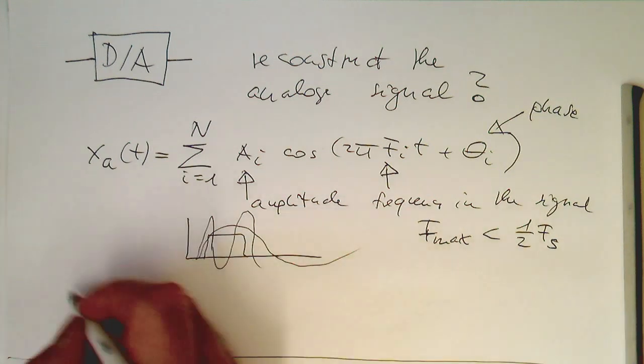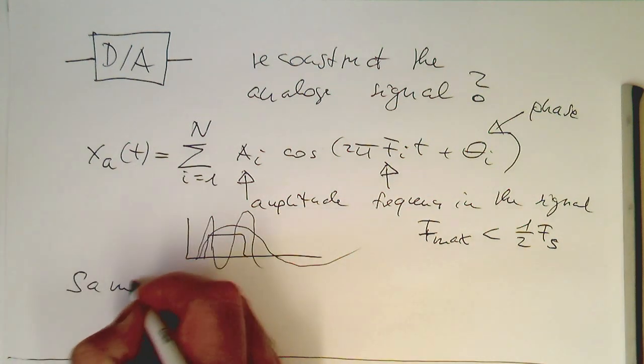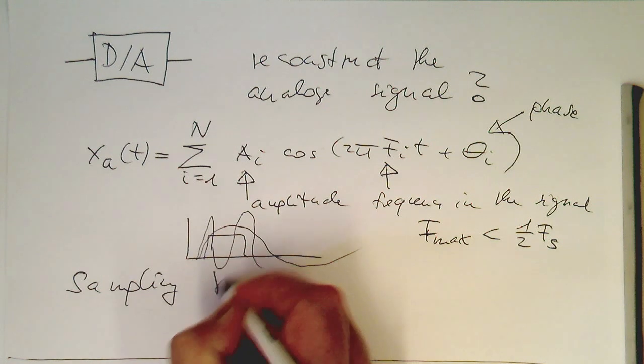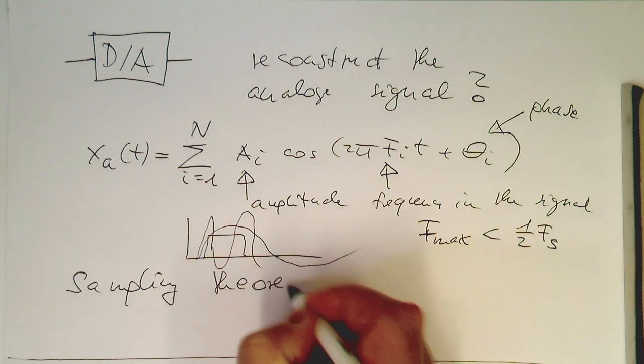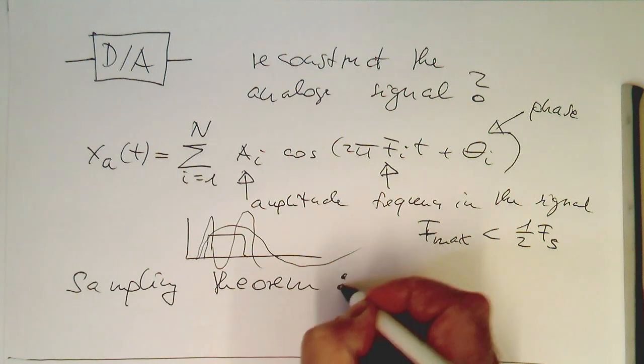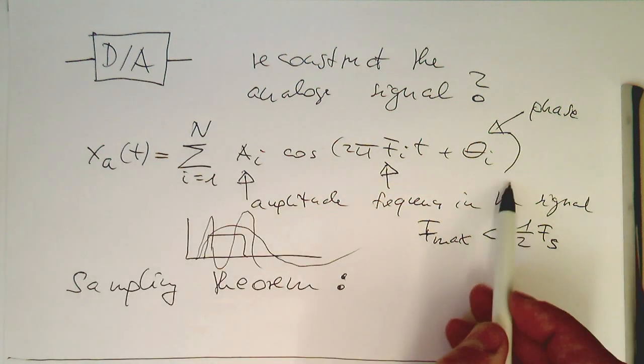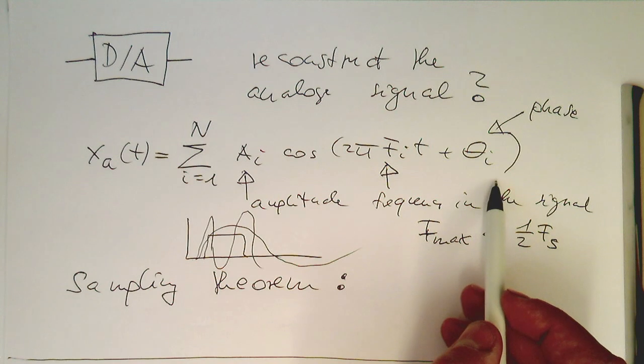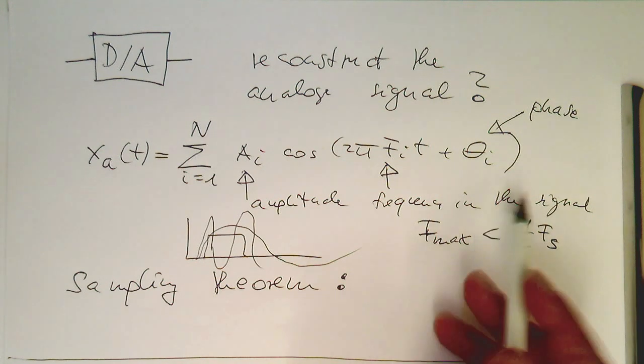So the so-called sampling theorem states that if a signal is constructed this way, it is possible to completely reconstruct this.